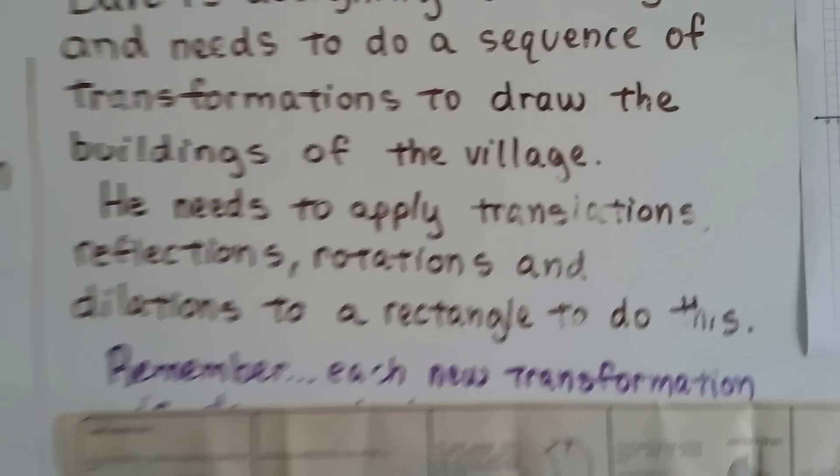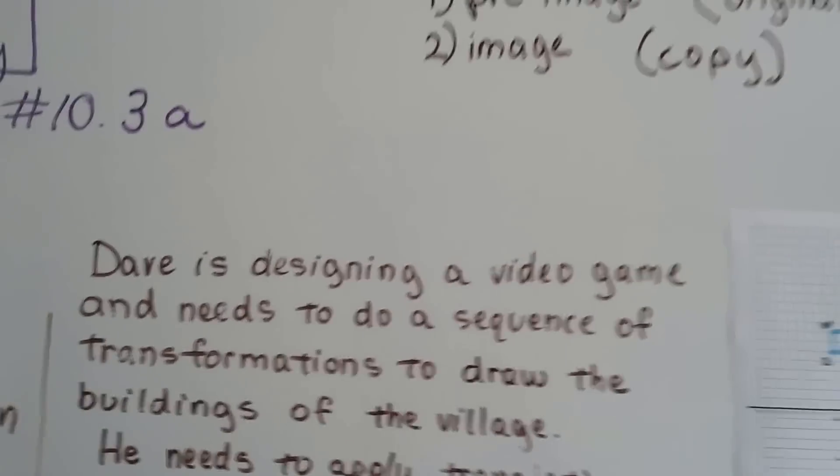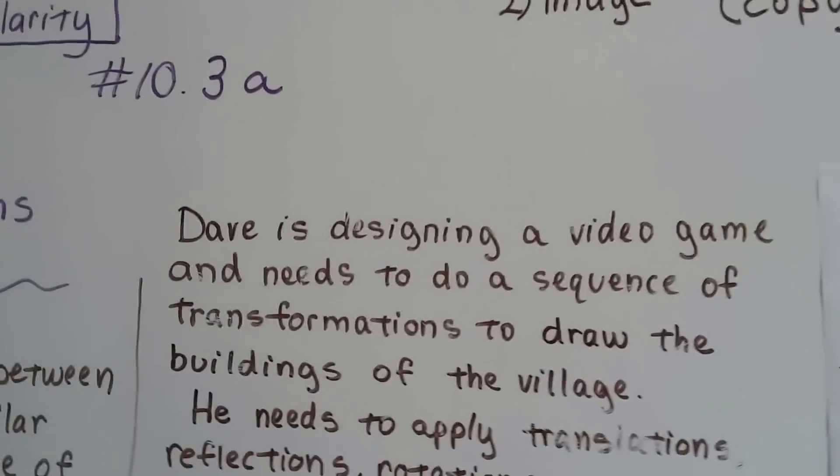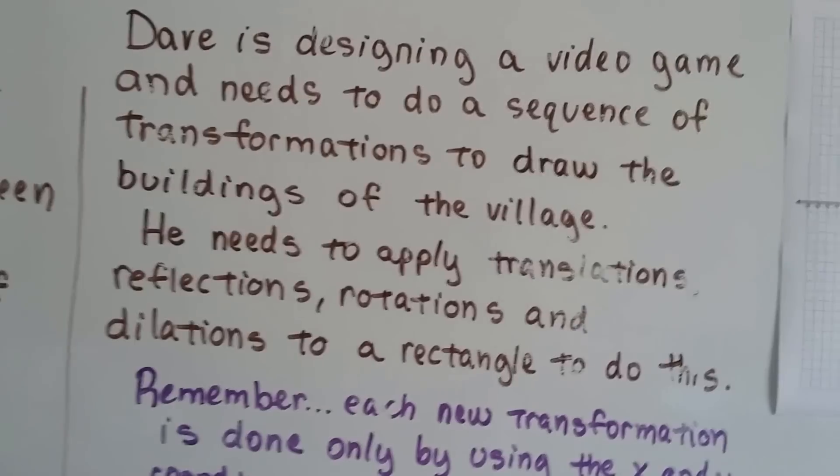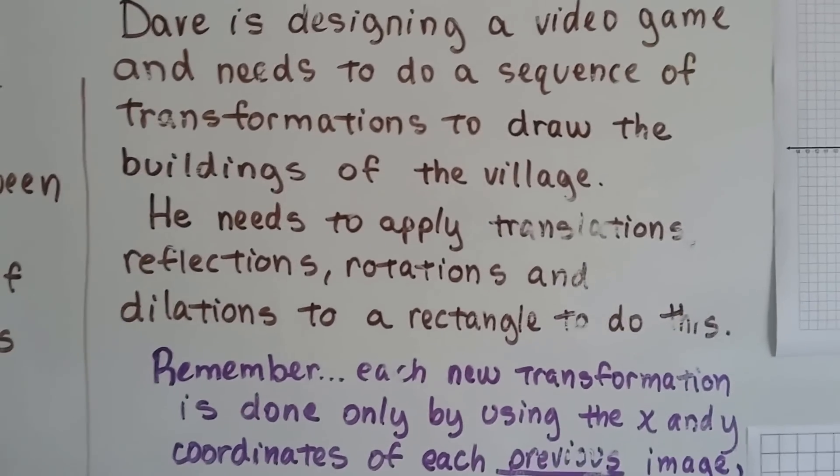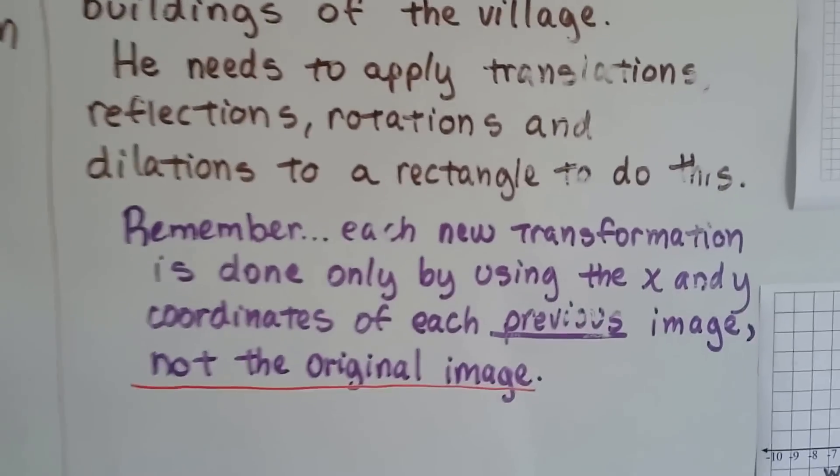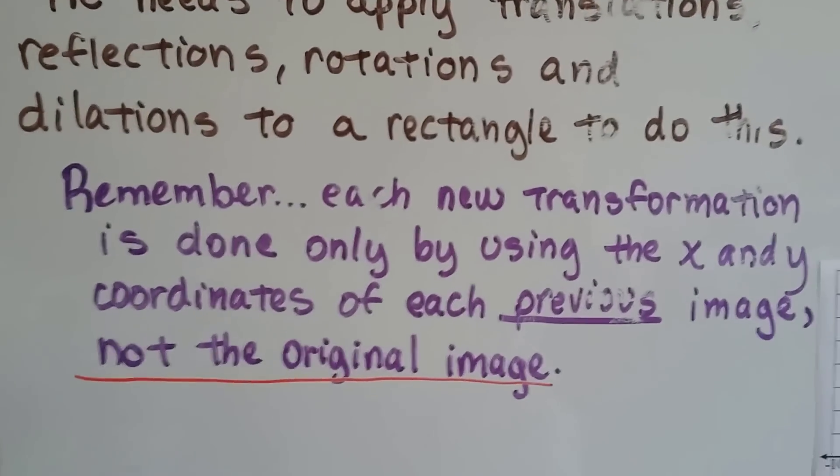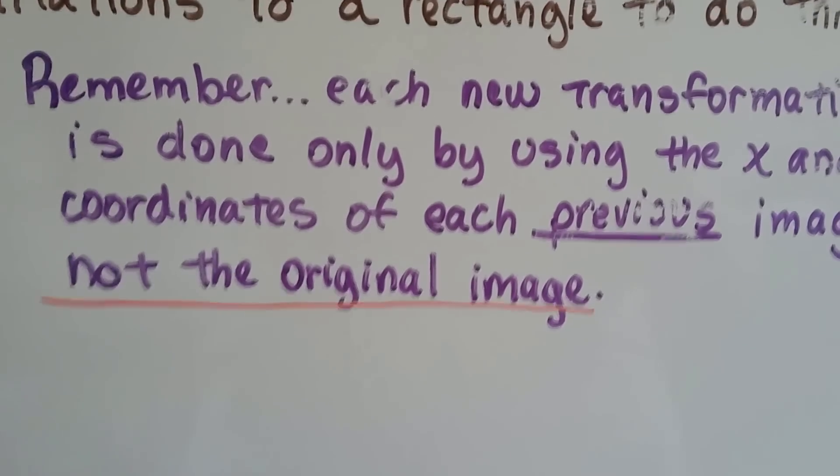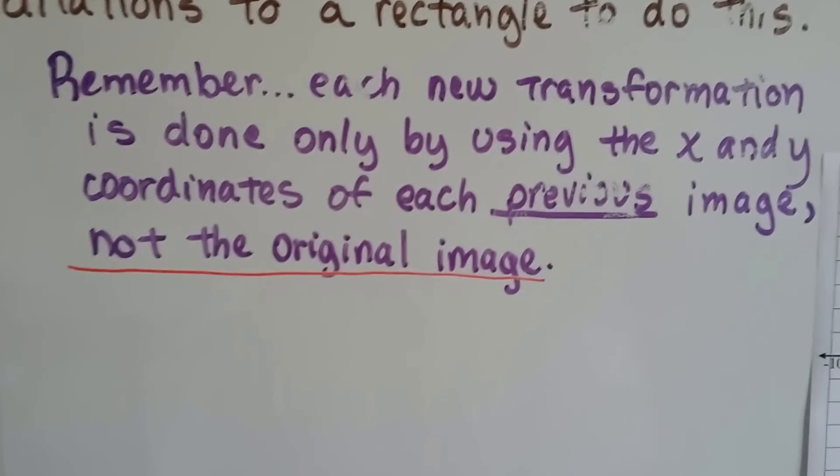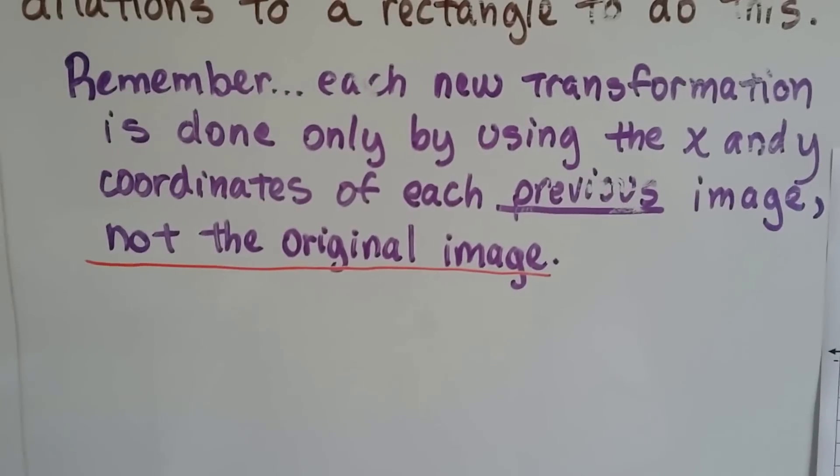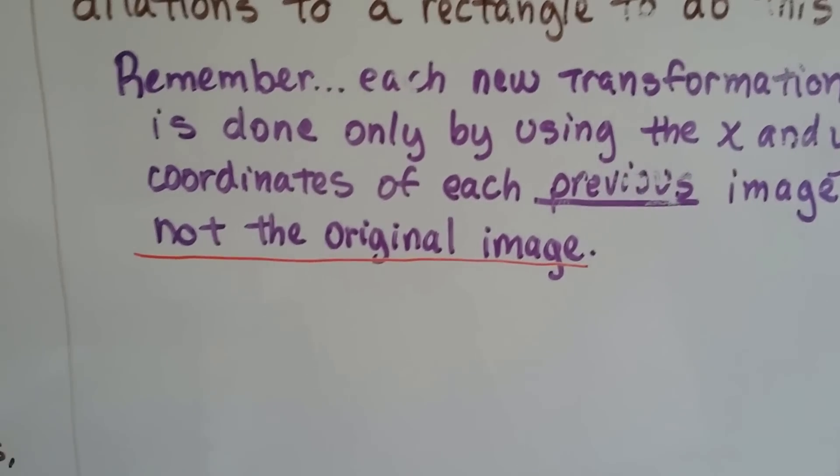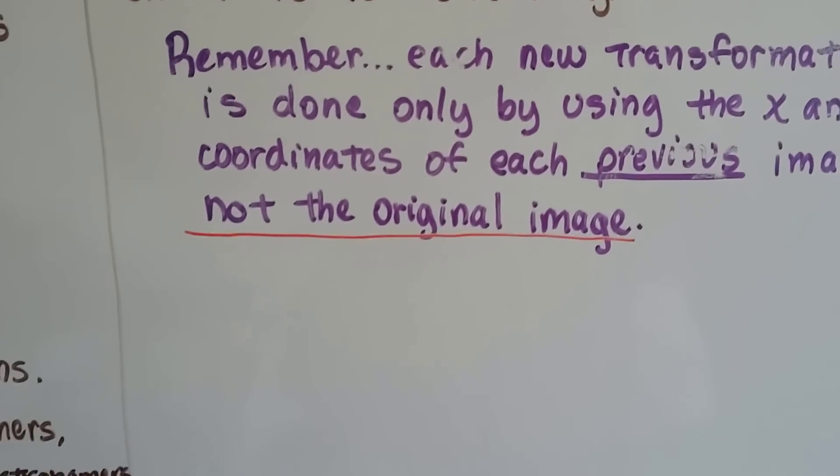So I wanted to show you that. Now what we're going to talk about is designing a video game. So let me remove these real quick. Dave is designing a video game and needs to do a sequence of transformations to draw the buildings of the village. He needs to apply the translations, reflections, rotations, and dilations to a rectangle to do this. Remember, each new transformation is done only by using the x and y coordinates of the previous image, not the original image.